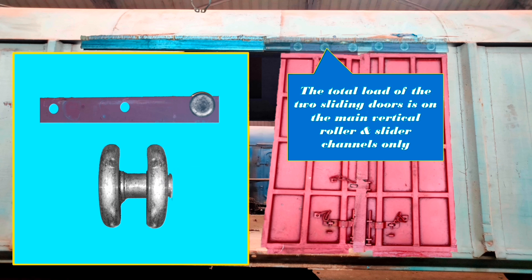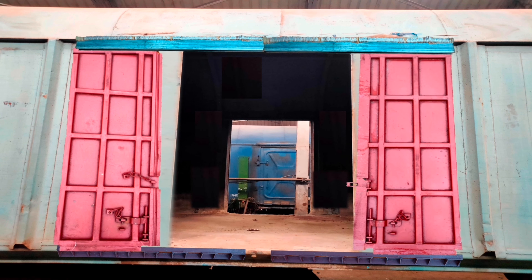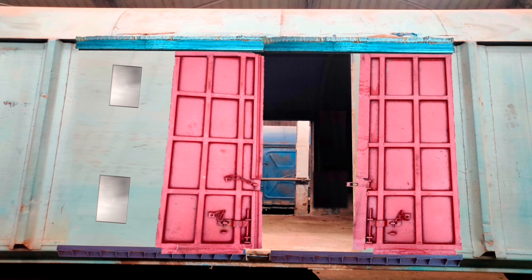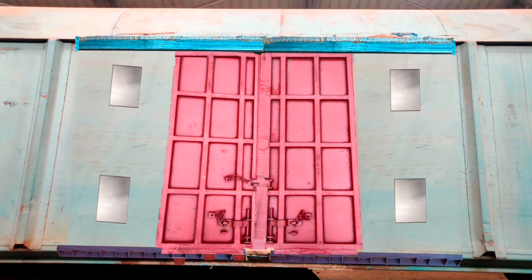Then move the two doors to the left side. The left guide rail with stiffener plate should be welded after fitting. Next, the right guide rail with stiffener plate should also be welded after fitting. The barrel bolt hold bracket should be fitted and welded. Finally, the end cover plate should be welded, which will prevent the doors from coming out.